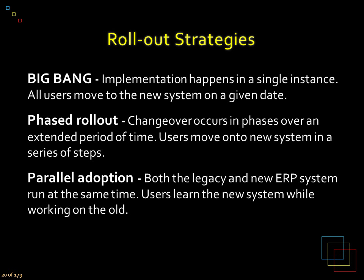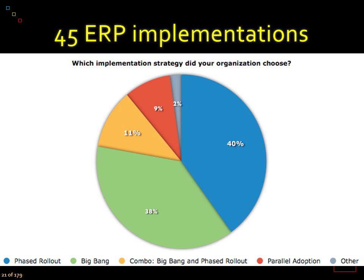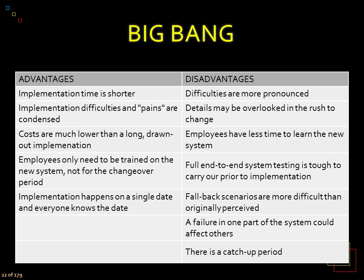Since these systems are so big and have such large impacts, you need to have some sort of rollout strategy when implementing them. These strategies can also apply to non-ERP implementations, but especially for ERPs you need a strategy — you may want to pause here to absorb things. Most organizations use phased rollout, followed closely by big bang. Parallel rollout is much less popular for reasons I'll explain shortly.